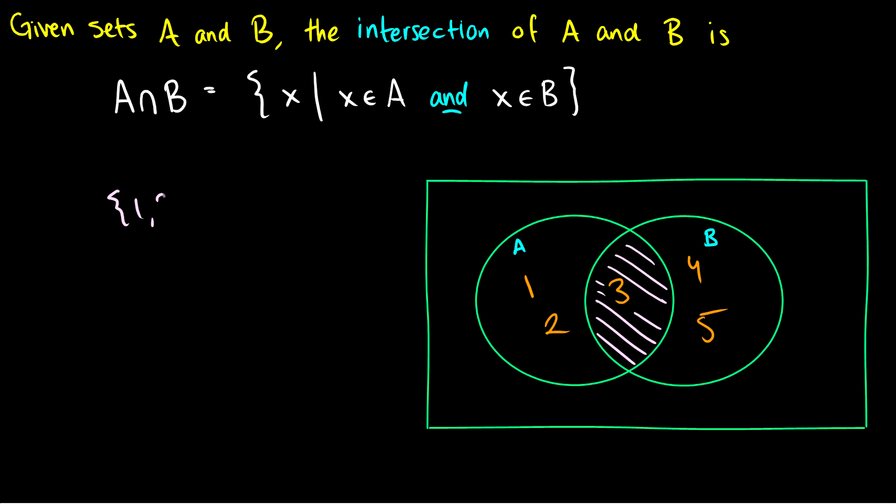So if I have 1, 2, and 3, and I have B with 3, 4, and 5, really we just check to see which elements are similar and then that makes the intersection. So the intersection of A and B would be the set containing 3 and that is with an upside down U.